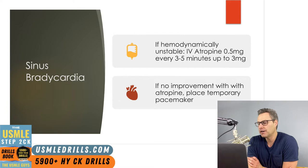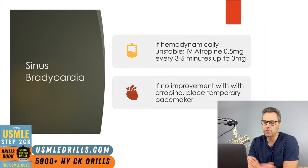For patients who are hemodynamically unstable, the first-line treatment is atropine — 0.5 milligrams every three to five minutes, up to a maximum dose of three milligrams. If the patient doesn't improve with atropine alone, a temporary pacemaker is placed.